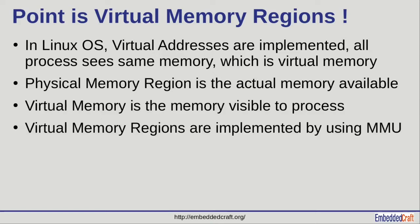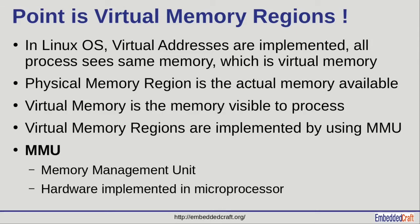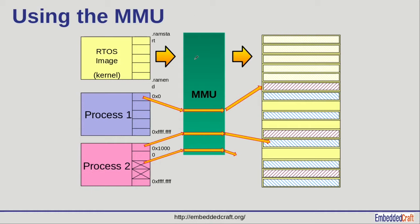Virtual memory regions are implemented through the Memory Management Unit, or MMU. MMU is available in Cortex-A CPU cores — all Cortex-A processors have an MMU unit. The MMU is a translator: the right-hand side is physical memory and the left-hand side is processes with virtual memory. Translation of virtual address to physical address is done by the MMU. Process one memory address 0x0 is translated by the MMU to somewhere in physical memory. Similarly, process two address 0x1000 is translated to physical memory. If a process address is not mapped anywhere, any request for that address will result in a fault.